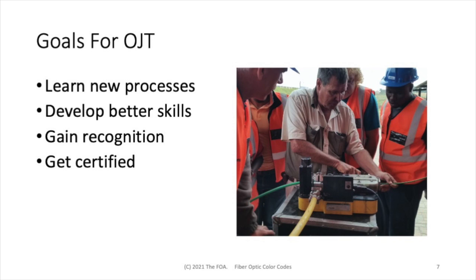The goals for OJT are very straightforward: to learn new processes and develop better skills. These techs are learning how to do blown cable installation from a manufacturer's representative, working on the job site with them, so they will develop those new skills that they can use in future jobs.